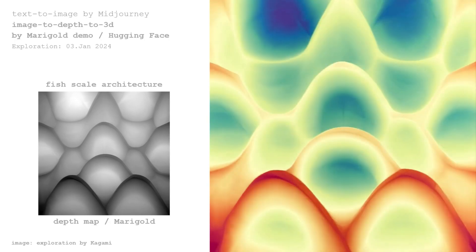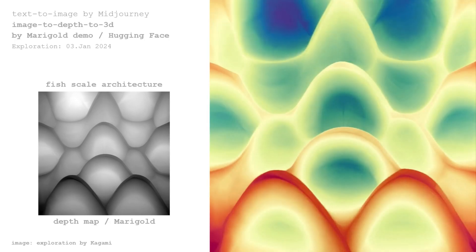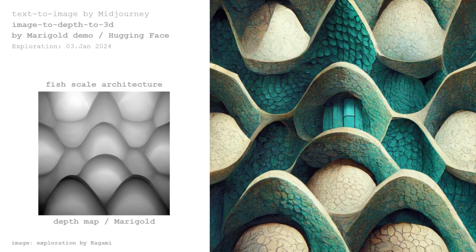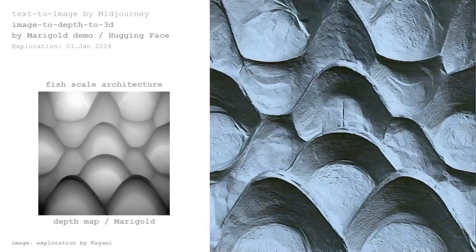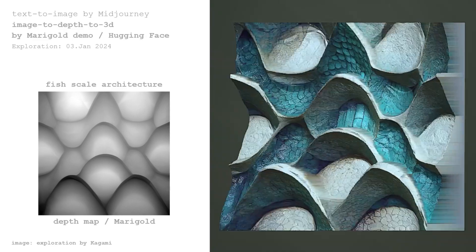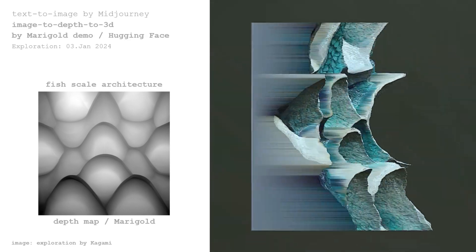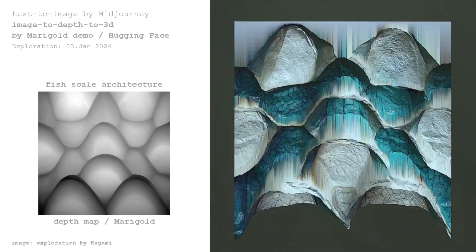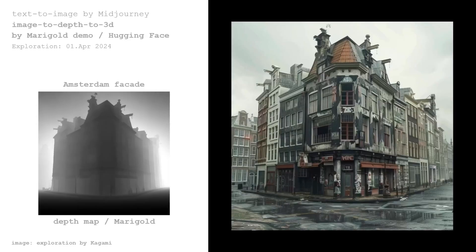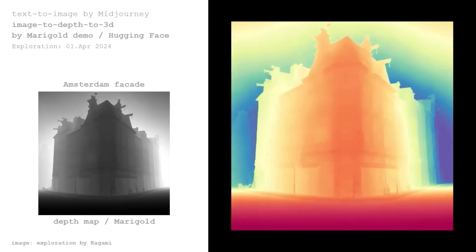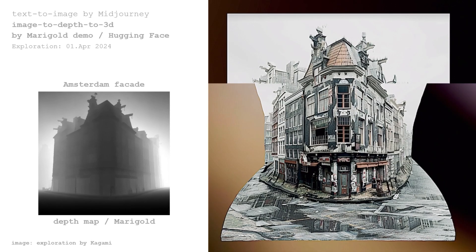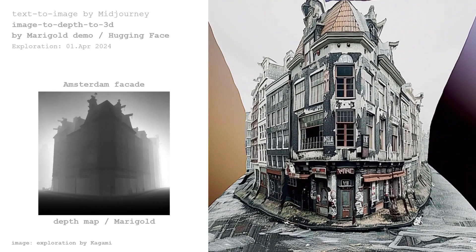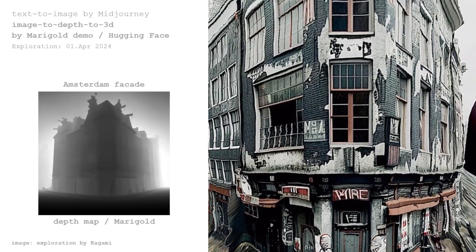The other depth estimation tool is Marigold. Again, you can see the depth map and 3D output. You can change image inputs as you want — this building facade image is generated with Midjourney, and you can see the generation of a depth map and 3D from Marigold.